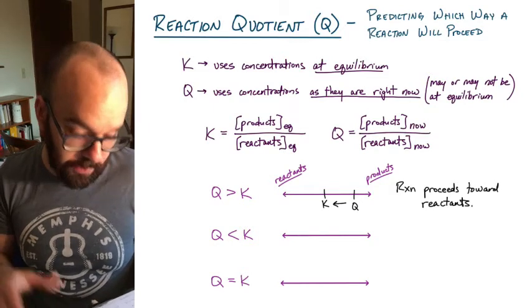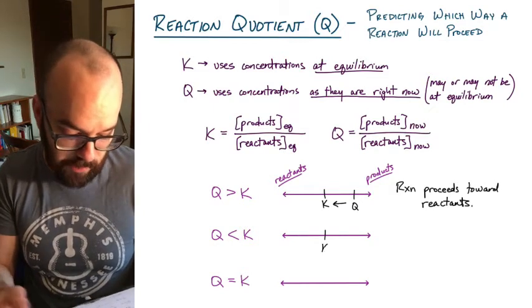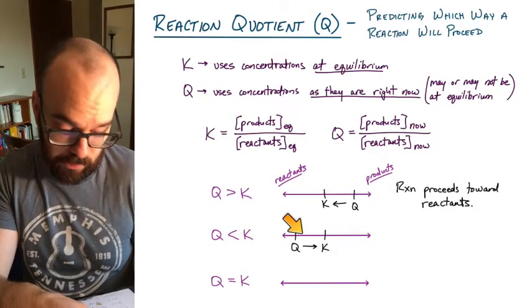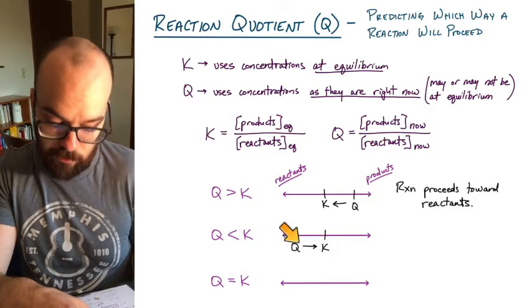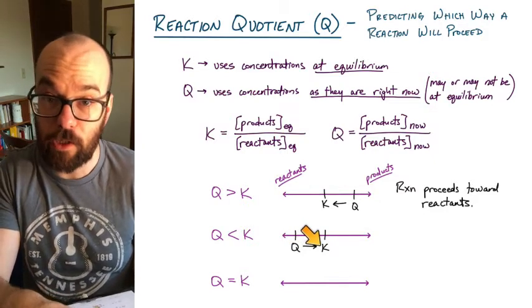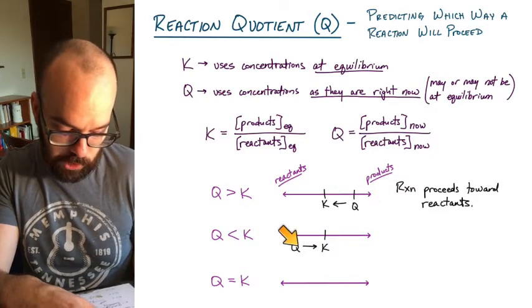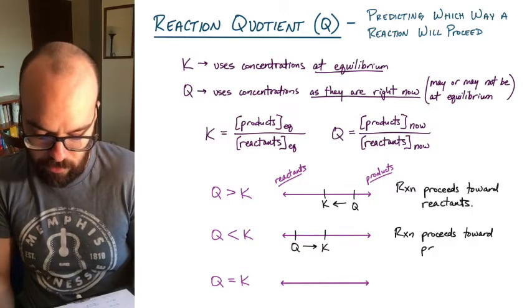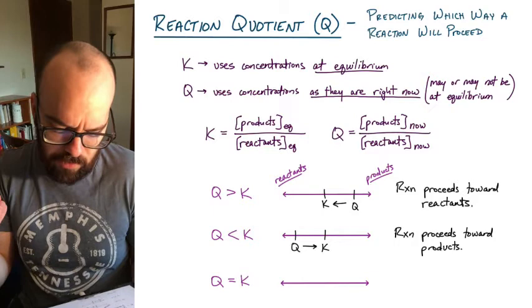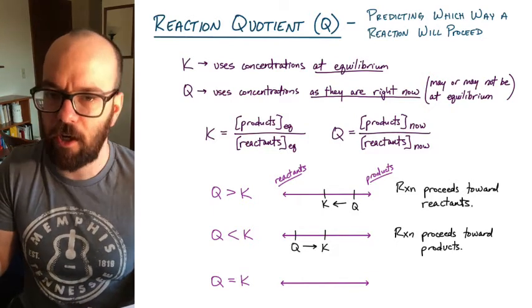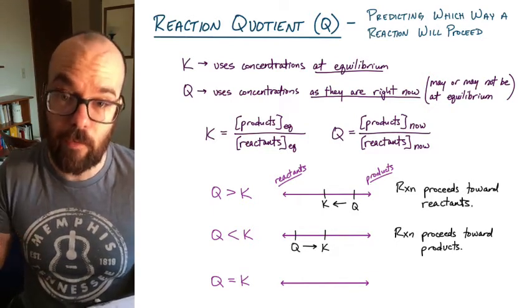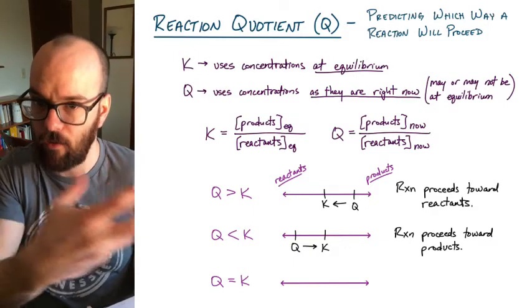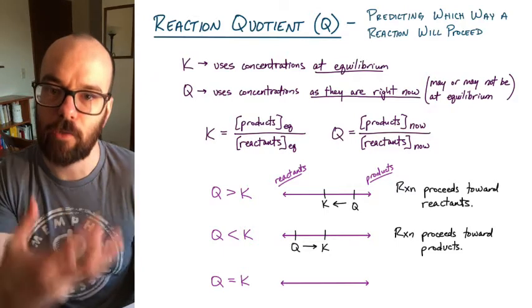If Q is less than K, plot K and Q on the number line with Q to the left. Q always moves toward K, so it shifts to the right, toward the products. The reaction will proceed toward the products, meaning there is too much reactant right now and not enough product compared to equilibrium. The rate at which reactants become products is greater, so the reaction moves toward the products to reach equilibrium.